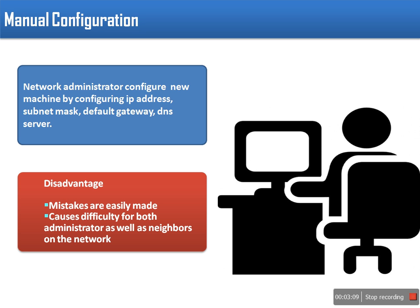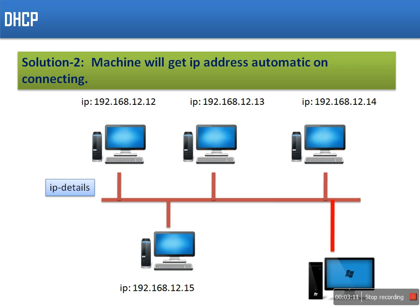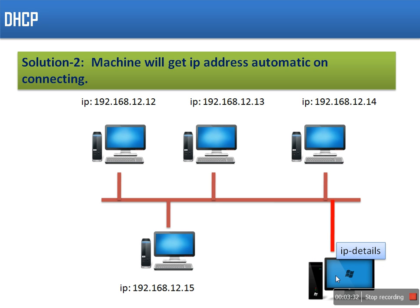So manual configuration has some problems. Another solution, which is a better one: whenever a new device is connected to the network, that device will obtain all the networking details from a designated server, and that server is the DHCP server. If this is the new machine, it automatically gets all the details required to connect to this network. The system which provides all this information is known as the DHCP server, and this node is considered the DHCP client.